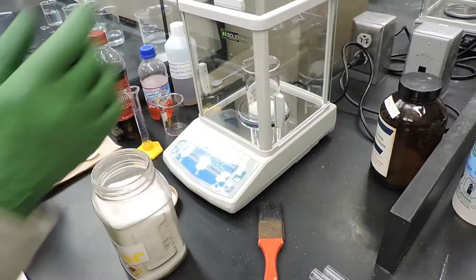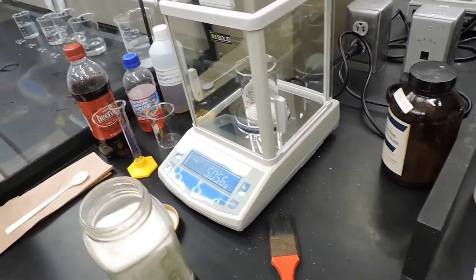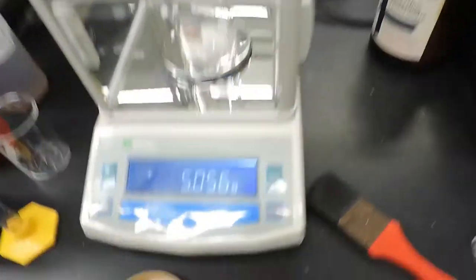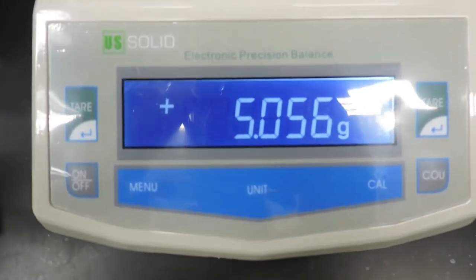And the exact mass of our 5 grams approximate of sugar will be 5.056 grams of sugar.